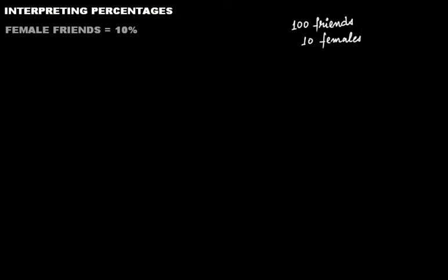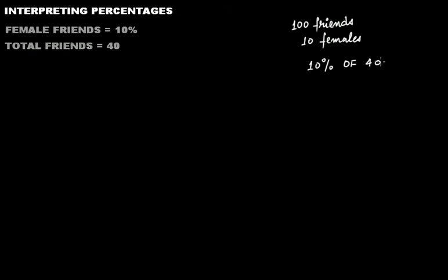So if the next information given to you is that you have a total of 40 friends, and 10 percent is the percentage of female friends, then what is the number of female friends? That's very simple: 10 percent of 40, because 10 percent means if you have 100 friends, 10 will be females. So it will be 10 over 100 times 40, which means you have four female friends.